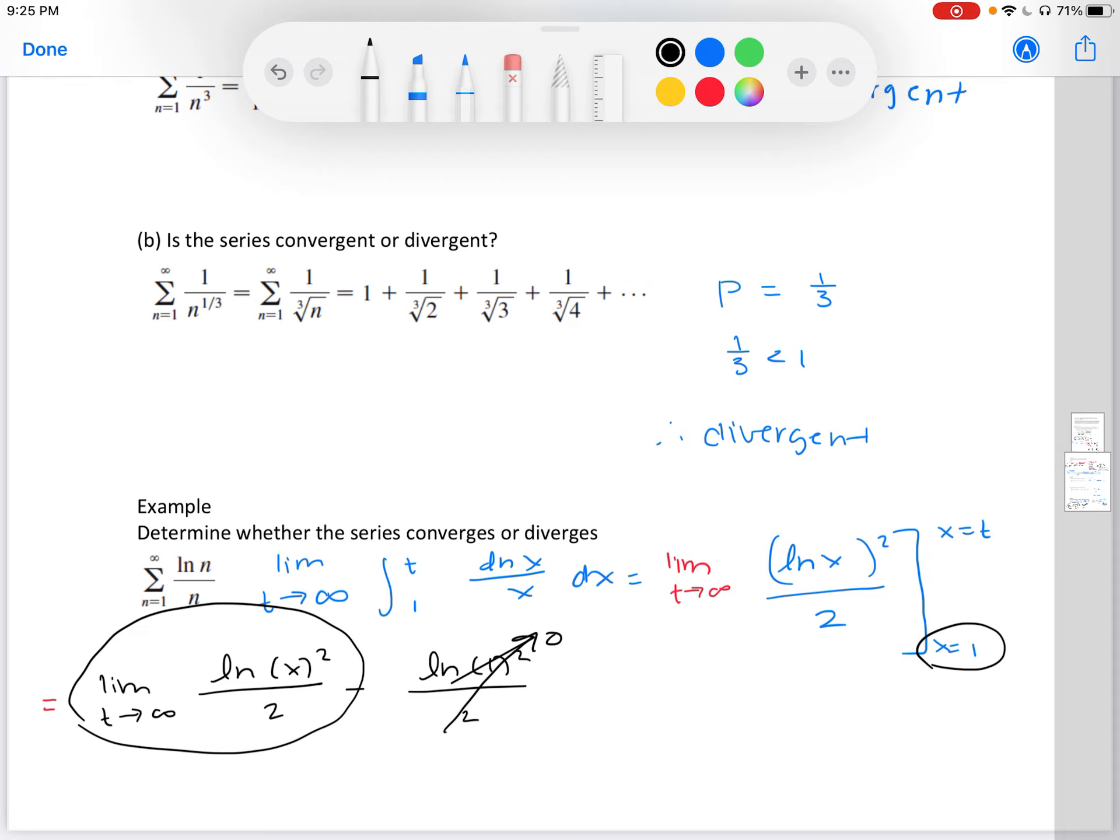As t is getting larger, we see that our ln value is also going to get larger. So therefore, our answer is infinity. So we conclude that it is divergent.